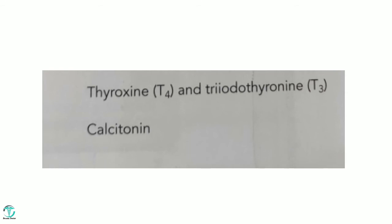The thyroid secretes T4, T3, and calcitonin. The thyroid consists of two types of cells: follicles and parafollicles. The parafollicle cells secrete calcitonin, which regulates calcium levels by inhibiting calcium. The follicle cells secrete T4 and T3 — T4 is also called thyroxine and T3 is called triiodothyronine. These are the hormones secreted by the thyroid gland.